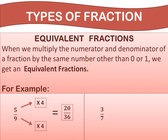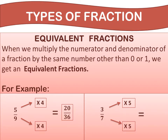Let's solve one more question. Find the equivalent fraction of 3 upon 7. To find the equivalent fraction of 3 upon 7, we multiply the numerator and denominator by the same number other than 0 or 1. If we take 5 as a common number, we get 3×5=15 and 7×5=35, giving 15 upon 35. So, 15 upon 35 is an equivalent fraction of 3 upon 7.